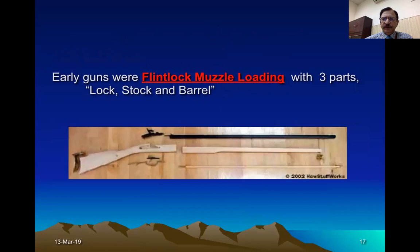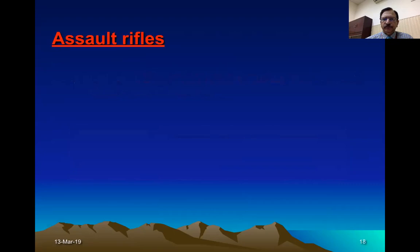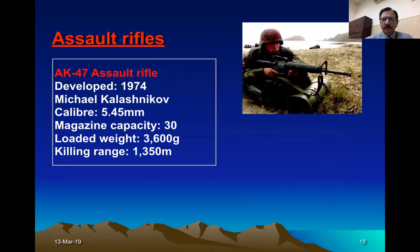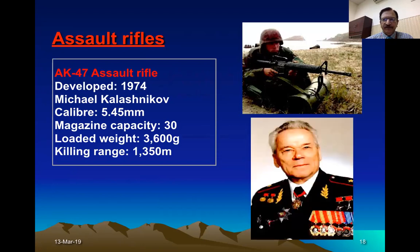The parts were the same for both front-loading and breach-loading weapons: a lock, stock, and barrel. Then came assault rifles. With advancement and greater sophistication, the most common is the AK-47, known as the Kalashnikov, invented by Russian scientist Mikhail Kalashnikov, who invented an automatic assault rifle.